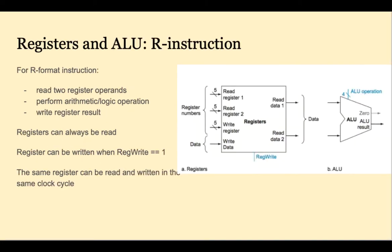Here we see what happens with the registers and the ALU for any R-type instruction. Two registers will be read from the register file into the ALU. Then the ALU does whatever arithmetic or logic operation the instruction specifies, and the results are written back to the correct register.